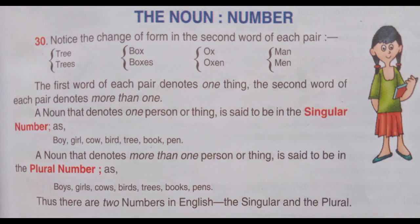Notice this change of form in the second word of each pair: tree, trees; box, boxes; ox, oxen; man, men. The first word of each pair denotes one thing. The second word denotes more than one. A noun that denotes one person or thing is said to be in the singular number, as boy, girl, cow, bird, tree, book, pen. A noun that denotes more than one person or thing is said to be in the plural number, as boys, girls, cows, birds, trees, books, pens. Thus there are two numbers in English: the singular and the plural.